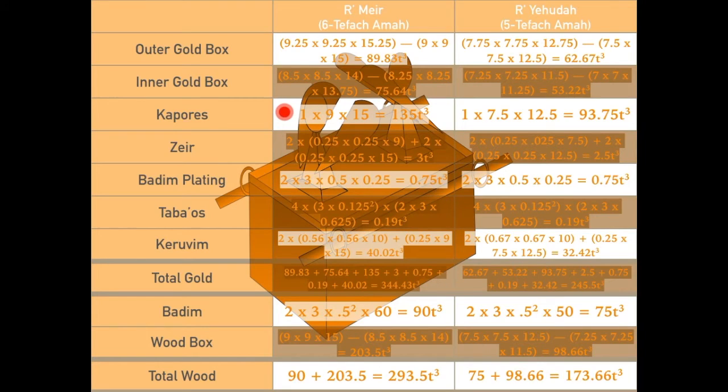The kapores, the lid for the Aron, is 135 cubic tefachim, according to Rabbi Meir, and 93.75 cubic tefachim, according to Rabbi Yehuda.